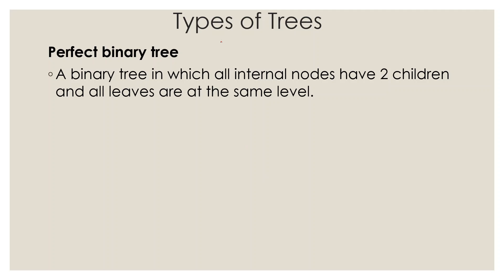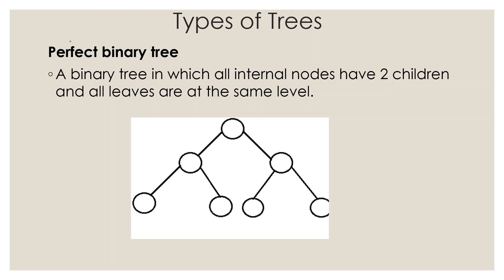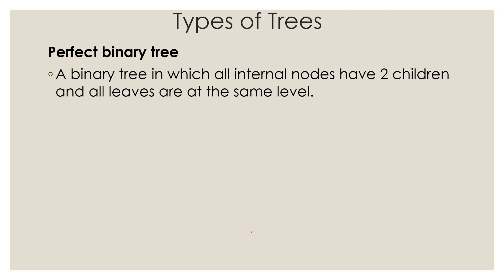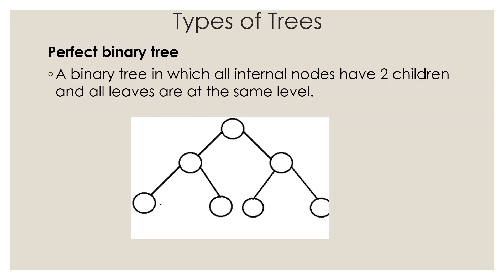The next type is the perfect binary tree. A perfect binary tree is a binary tree in which all internal nodes have two children and all leaves are at the same level. If you have two children at every internal node, all the leaf nodes are at the same level. This is what we call a perfect binary tree.